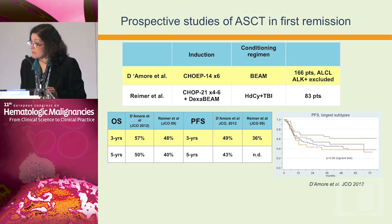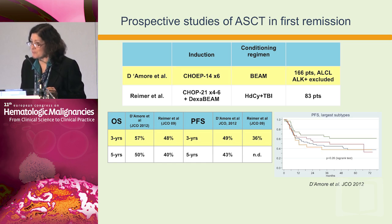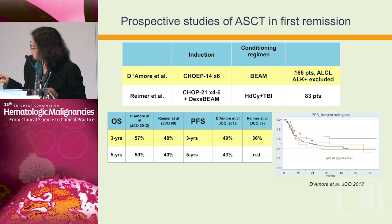The use of transplant has become a standard in the United States, though the question remains whether it is indicated in all patients. We have two prospective studies of upfront transplant: the Nordic study incorporating etoposide in their regimen and the German study with a CHOP-based regimen. The German study used TBI as opposed to BEAM for conditioning. Looking at overall survival and progression-free survival in these two series, the results are fairly similar. The take-home message is that this approach, at best, benefits about half of our patients.